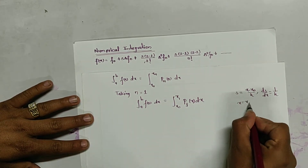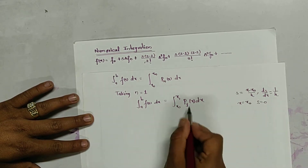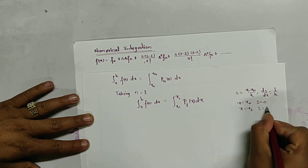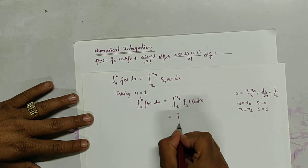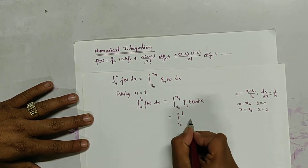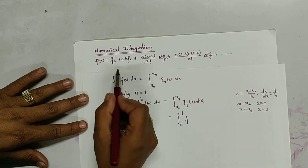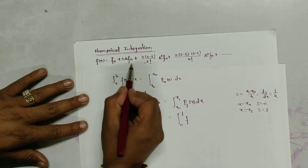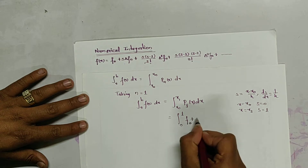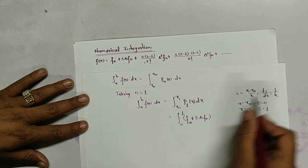When x equals x0 we get s equals 0, and when x equals x1 we get s equals 1. So this integration can be changed into the form with limits 0 to 1, where f(x) becomes f0 plus s·Δf0.